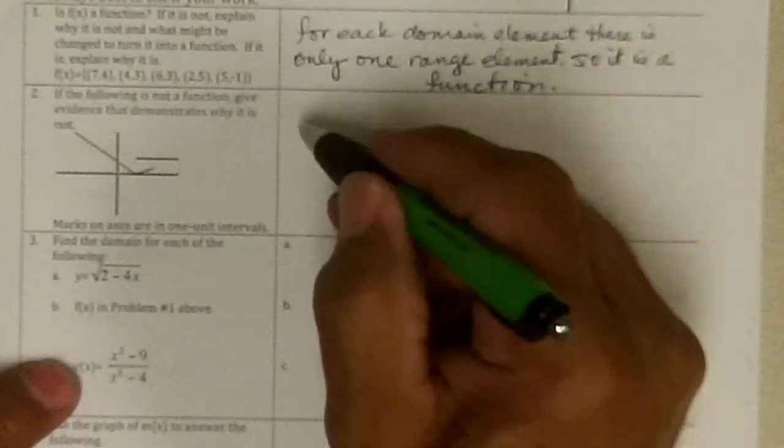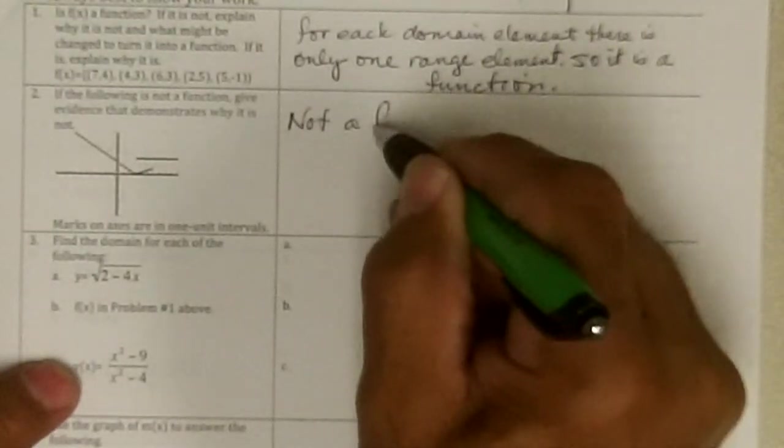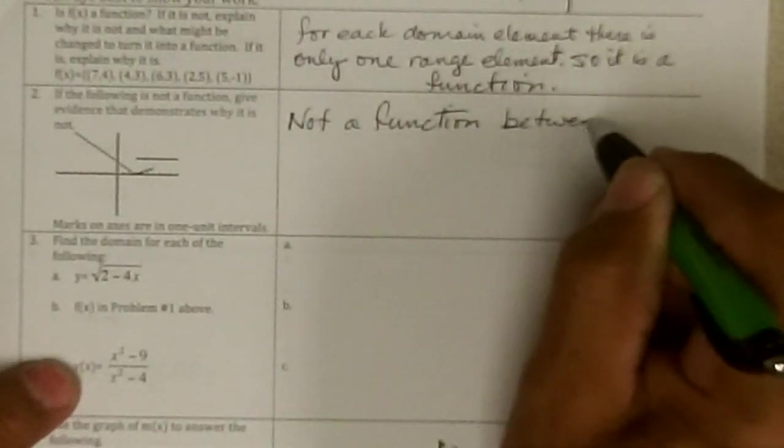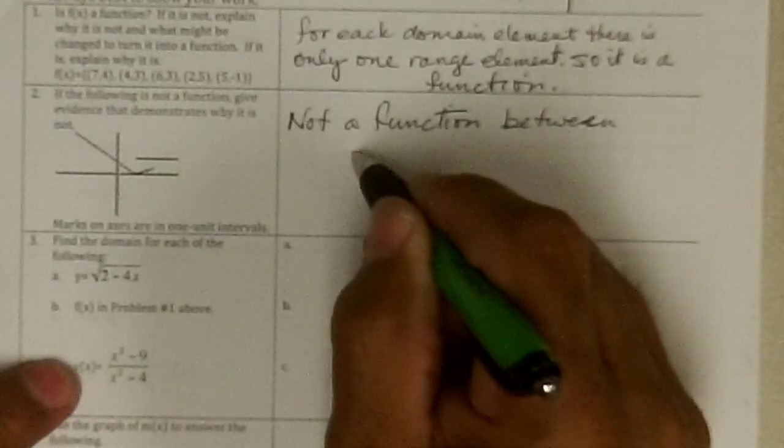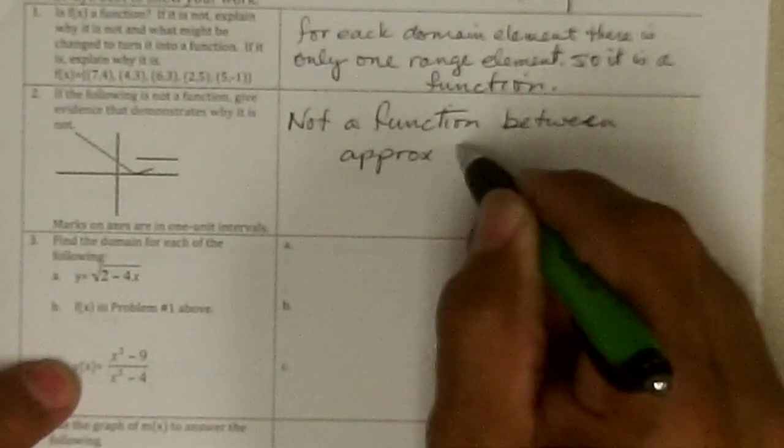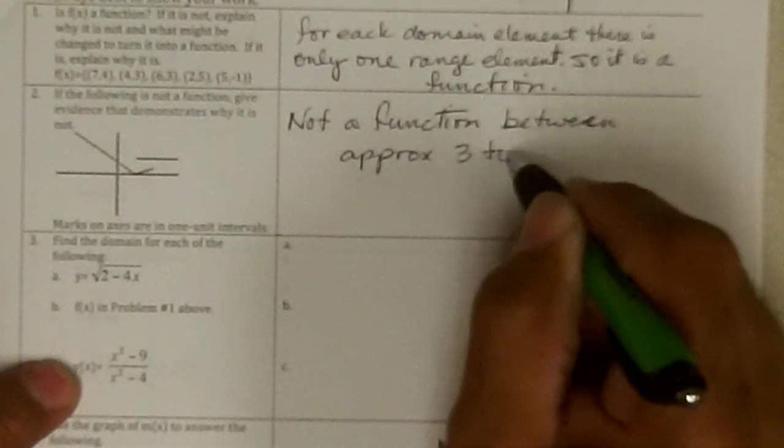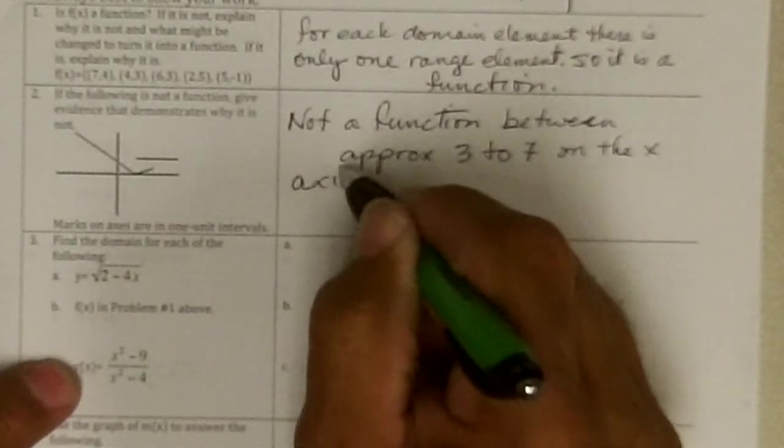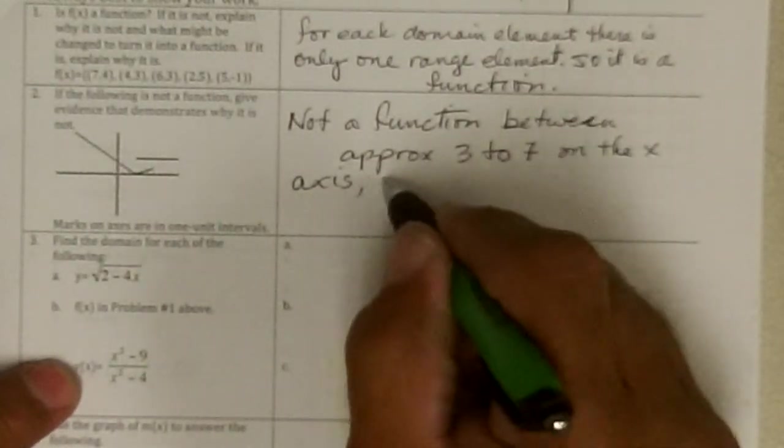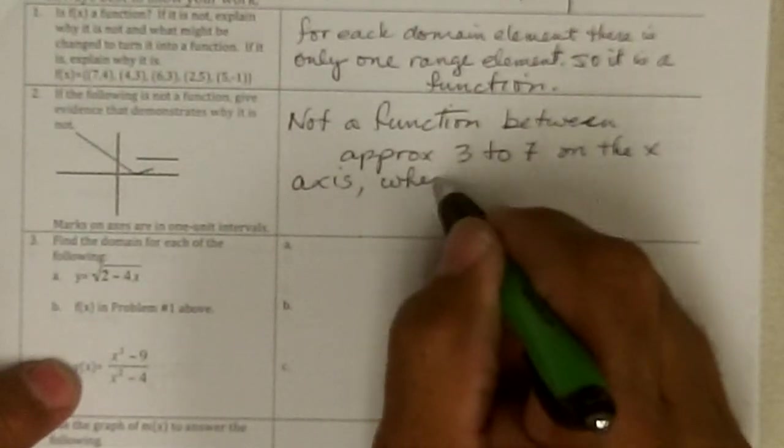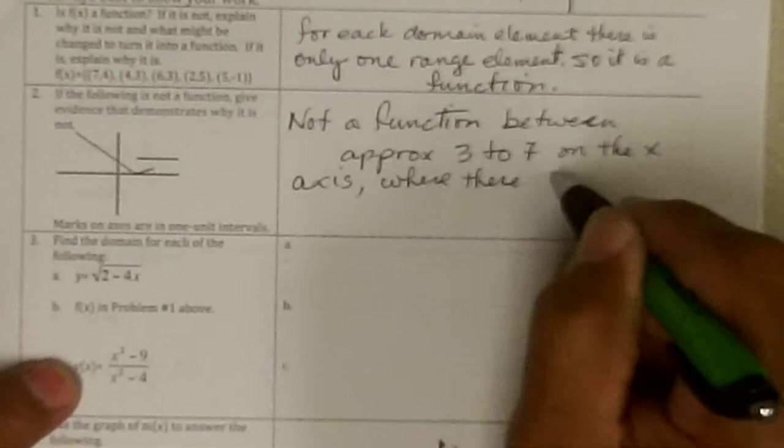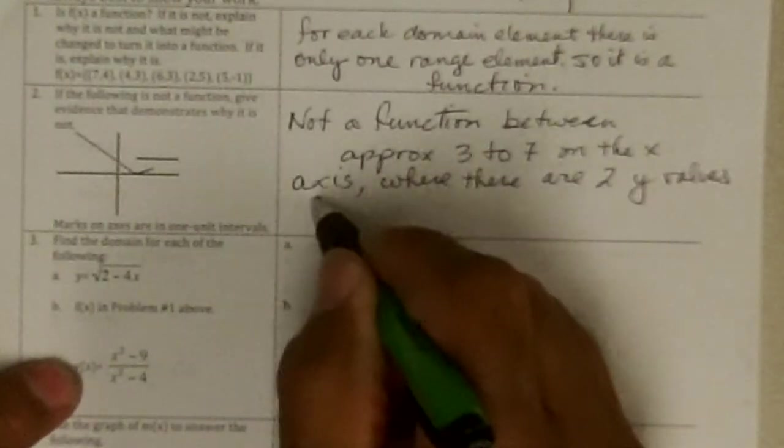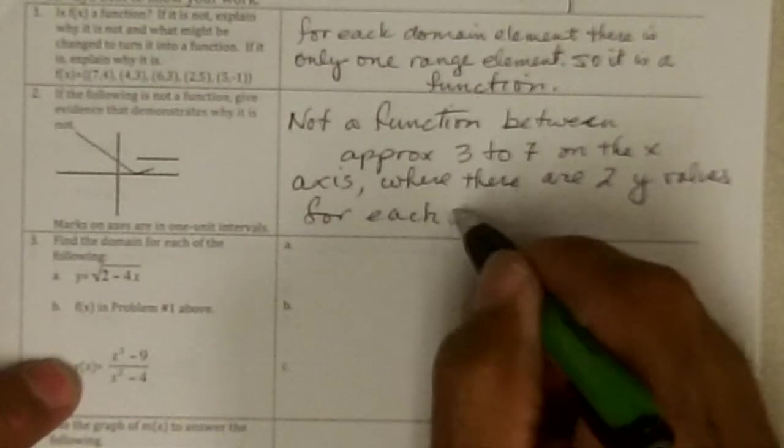Does not pass the vertical line test. So it's not a function between approximately 3 to 7 on the x axis, where there are two y values for each x value.